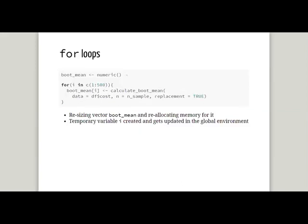What actually goes on within the for loop? If we break down the code, we first set up the vector boot_mean to collect our results, and then within the for loop we append each sample mean to it. What's happening in the background is R is trying to identify boot_mean from memory, and every time it calls that, it has to resize the vector and reallocate memory to it — which makes things a bit slow.